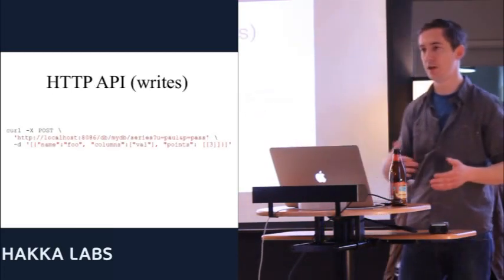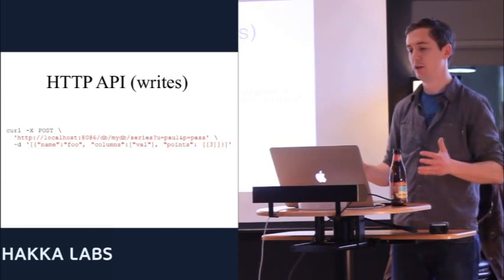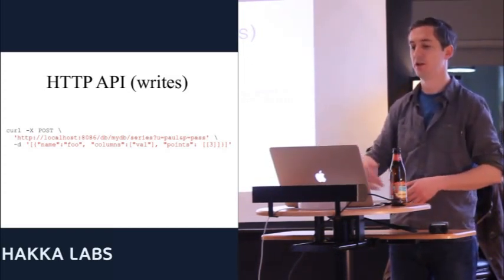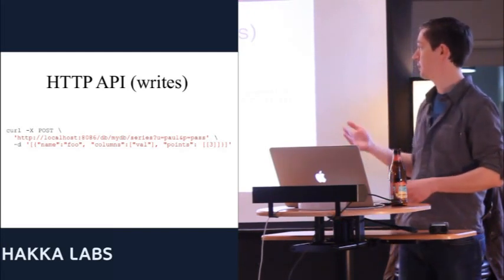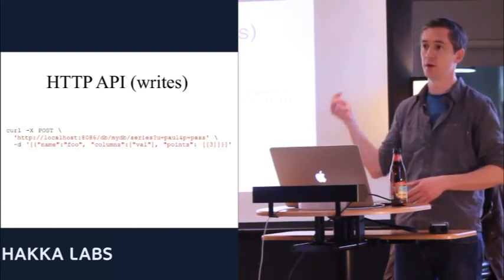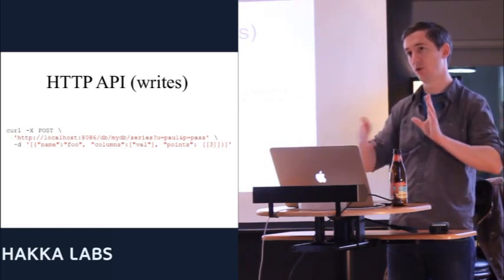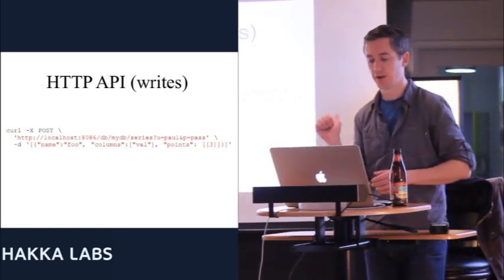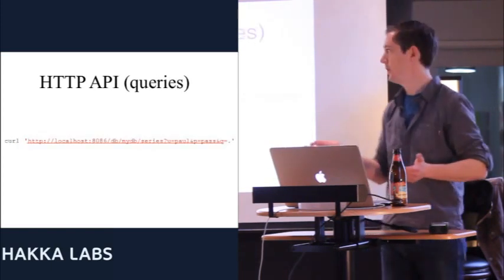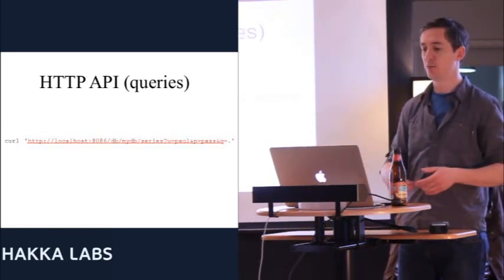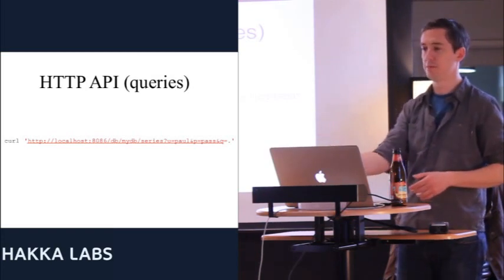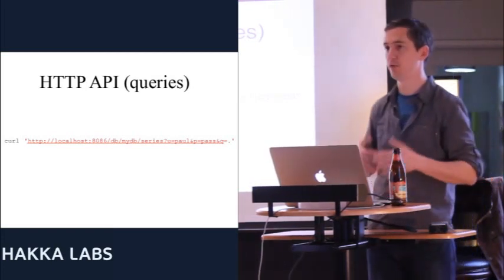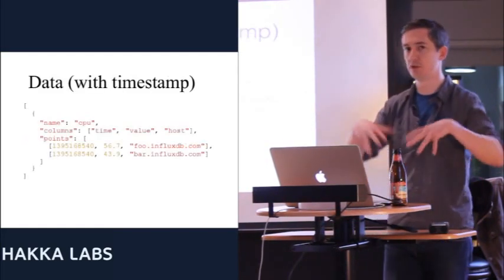The primary API is all HTTP based. You can do a POST to the endpoint, specify the database name, specify a username and password either in query parameters or basic auth, and give it a JSON blob which is a collection of objects. Queries are a GET against the endpoint — you pass username, password, and a q equals some string. We have a query language specifically designed for this.